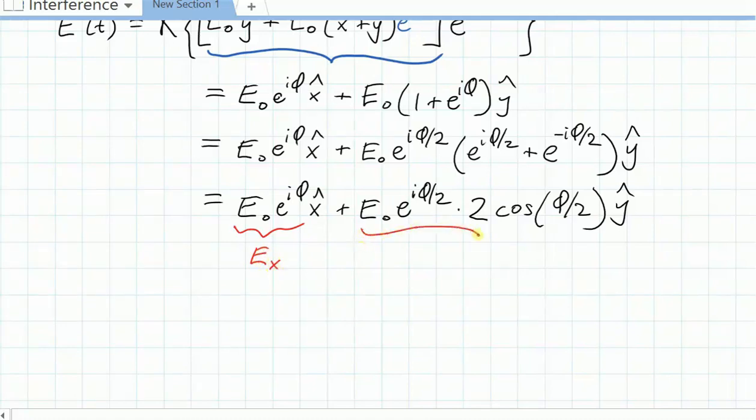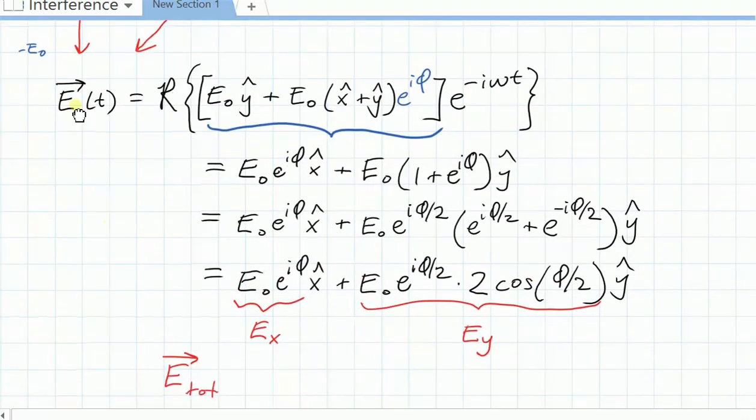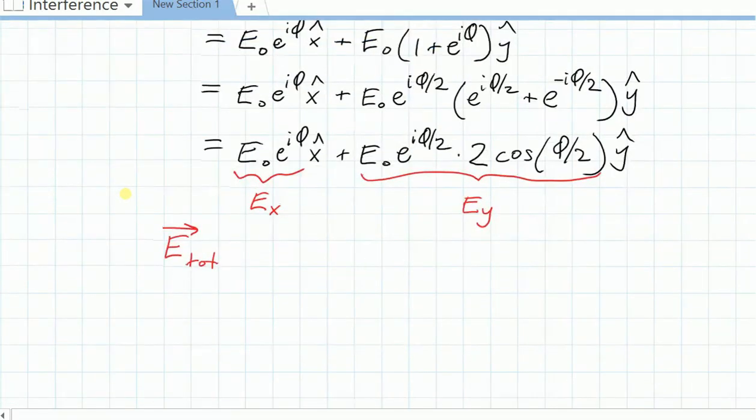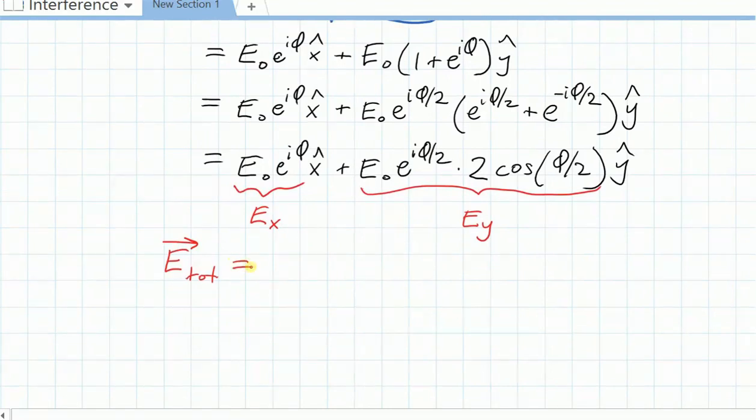I am going to relabel this and call it the quantity e sub x. And I'm going to relabel this as the quantity e sub y. And I'm going to name a certain quantity e total, which notice doesn't have any time dependence. That's just equal, e total is equal to e x x hat plus e y y hat.